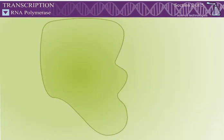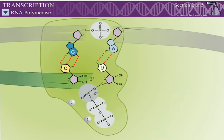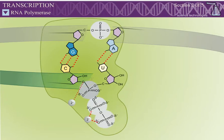The active site contains two metal ions. This is consistent with the mechanism for nucleotide addition described for DNA polymerase. Like DNA polymerase, RNA polymerase always adds nucleotides to the three prime end of a growing polynucleotide.